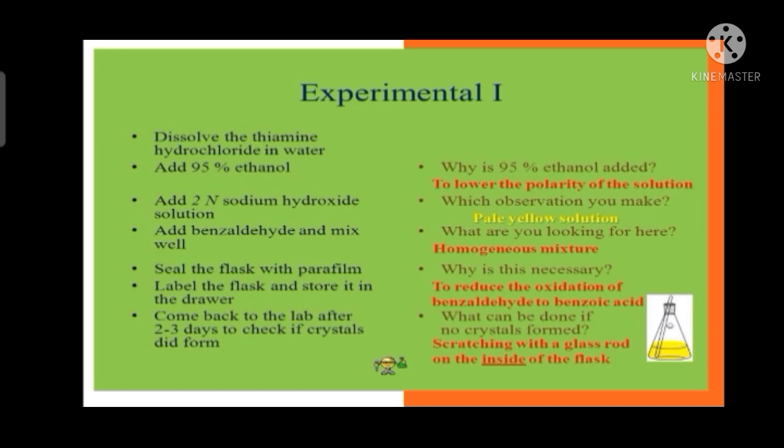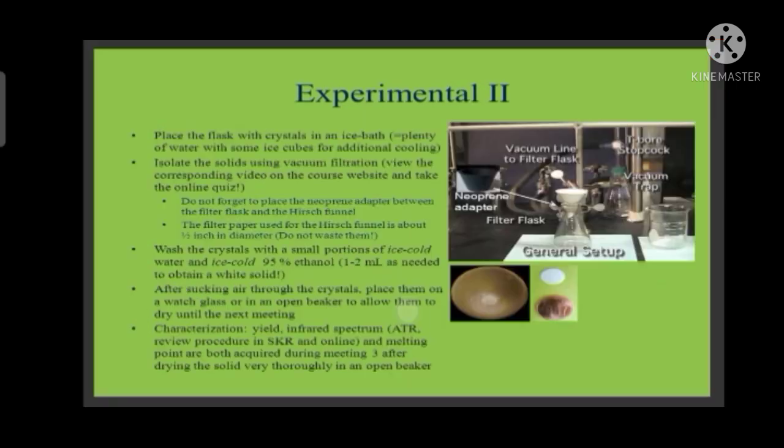The right side of the page contains some questions that definitely will strike your mind - why is 95% alcohol added? It is added to lower the polarity of the solution. As we know we have taken water as solvent and water is a polar solvent, so to reduce the polarity we add ethanol to it. Here are some more obvious questions. If you like then please have a look on it. Now let us move further towards the more procedure steps.